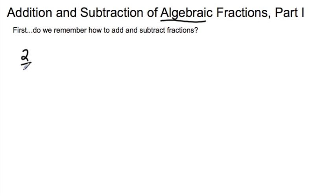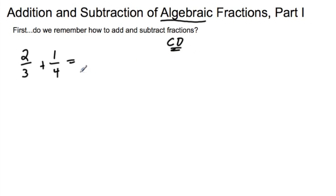I'm going to start out with something like two-thirds plus one-fourth. In order to add and subtract fractions, you have to have a common denominator. Looking at two-thirds and one-fourth, I'm going to focus on the denominator — four and three. The lowest common denominator between the two is twelve.